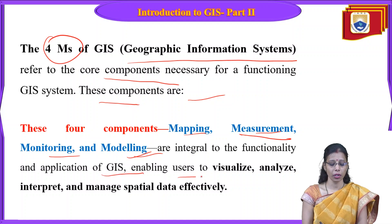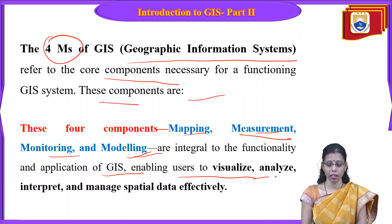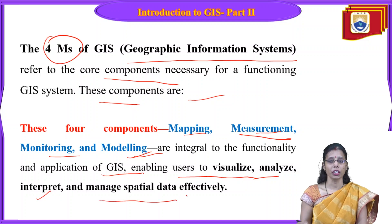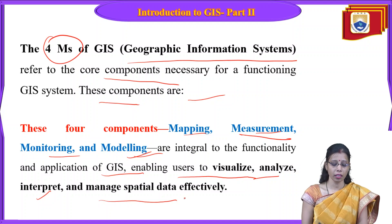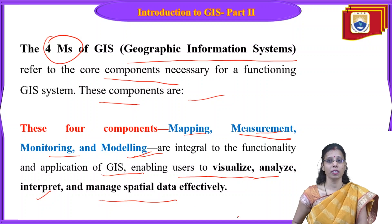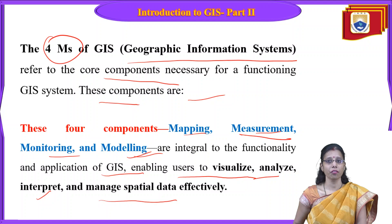The 4Ms of GIS refer to the four components necessary for the functioning of a GIS system: mapping, measurement, monitoring, and modeling. These are integral to the functionality. Together they enable users to visualize, analyze, integrate, and manage spatial data effectively.